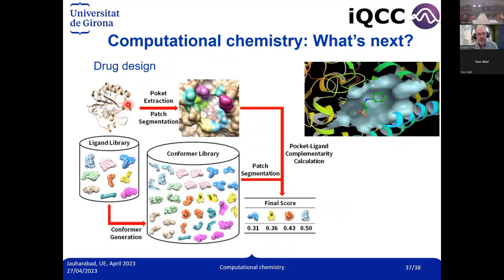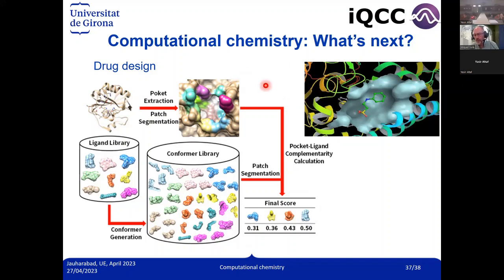Drug design is another important application: if a receptor is dysfunctional, you want to insert a ligand to modulate it. With a library of different ligand conformers, molecular mechanics docking can identify which molecules interact best with the active site; the best candidates are then tested experimentally to develop new drugs. There are many other situations where computational chemistry can be applied in the future, and I think there is a bright future for this field — I encourage you to follow this path because you can really enjoy it. Thank you very much for your attention.